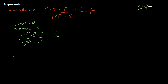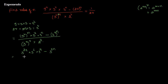Now using the law that a to the power m, raised to the power n, equals a to the power m times n — applying that law gives us 3 to the power 2n, times 3 squared, equals 3 to the power n, minus 3 to the power 3n, divided by 3 to the power 15.